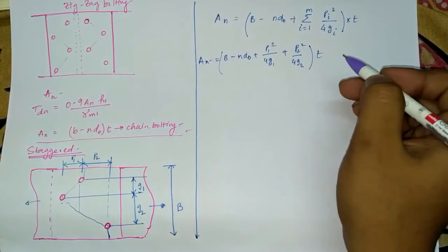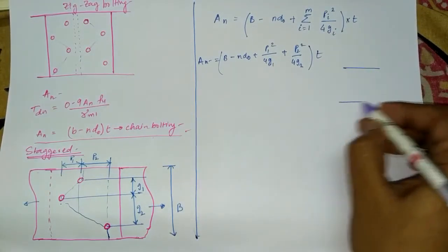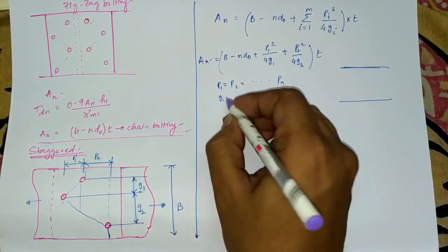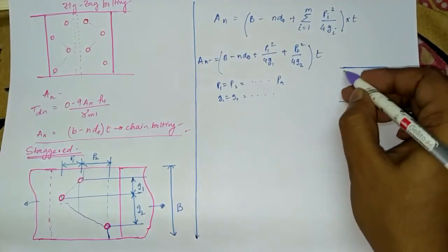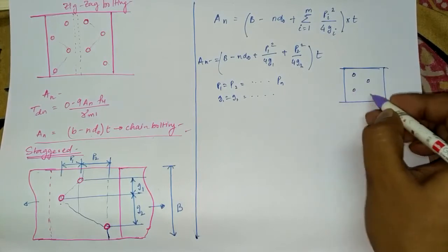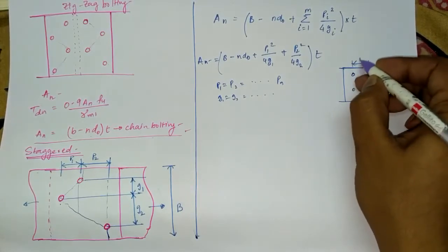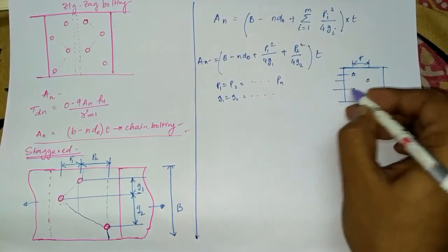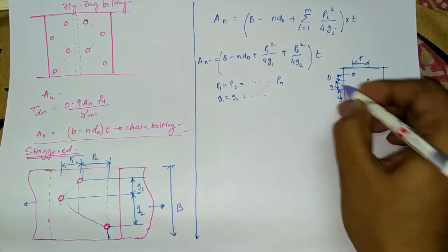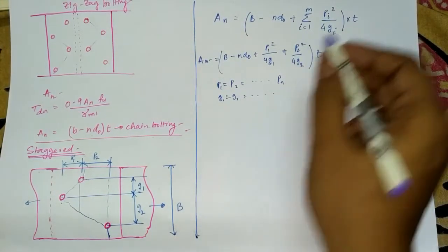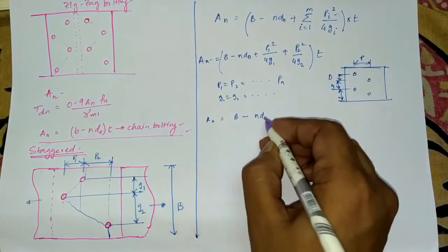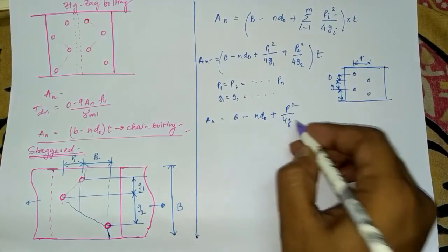Now, if p1 = p2 = p and g1 = g2 = g — meaning the staggered bolting is uniformly placed — then the formula simplifies to: An = (b − n×d0 + p²/4g) × t.